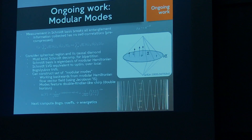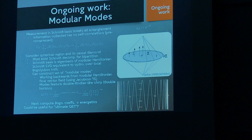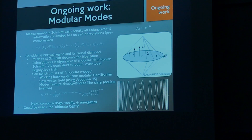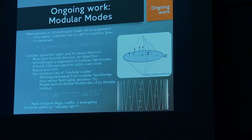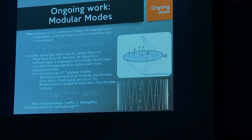Next steps are to compute Bogoliubov coefficients and then compute the energetics: when we break all the entanglement, how much energy was injected? Could this be used for an ultimate QET protocol? What's interesting is that when you optimize over local unitaries to find the Schmidt basis, you filter out self-correlations within A and A-bar, keeping only correlations that cross A and A-bar. So instead of sampling redundant neighboring points, this approach gives completely uncorrelated information — like the Rindler decomposition in terms of Rindler modes — the perfect raw information for QET.